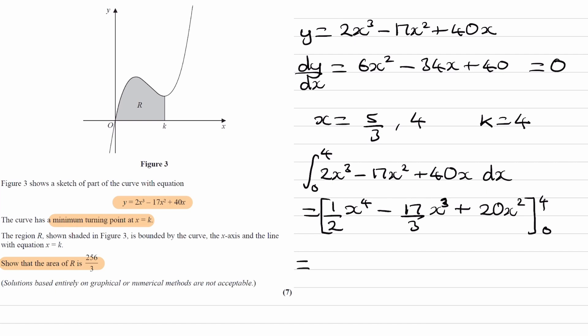And you want to write out the steps of putting in those limits to get one of the method marks for this question. So 1 half, 4 to the 4 minus 17 over 3, 4 cubed plus 20, 4 squared. And then I'll just put minus 0 at the end, which would be what you get when you put in 0 into all of these three terms.